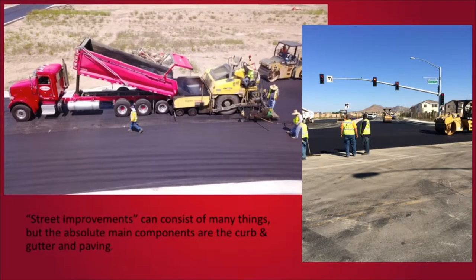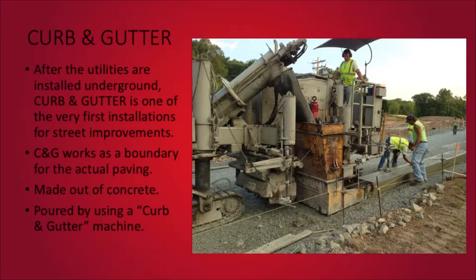The term street improvements can consist of many different things, but the main components — especially the ones we're going to talk about in this video — are the curb and gutter and paving. Typically after the utilities are installed underground, curb and gutter is one of the very first installations for the street improvements. The curb and gutter works as a boundary for the actual paving. It's made out of concrete and it's poured using a curb and gutter machine, just like the one you see in the picture to the right.